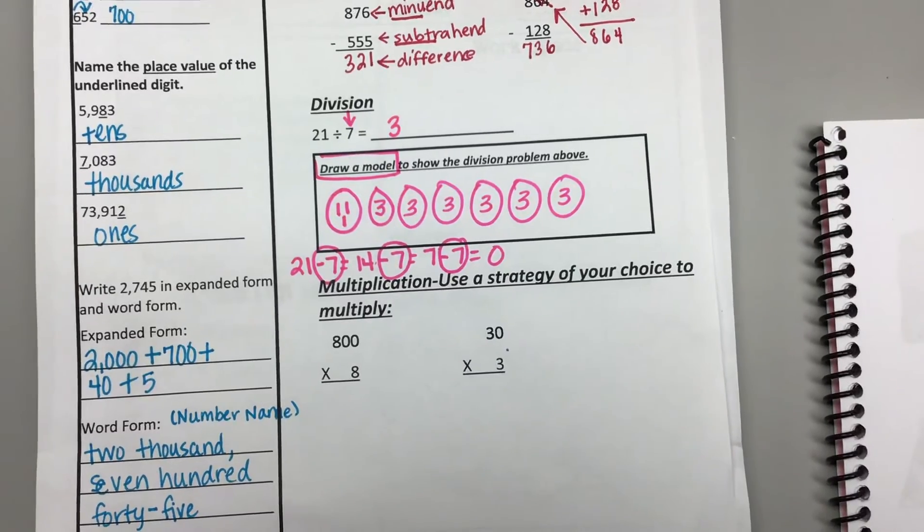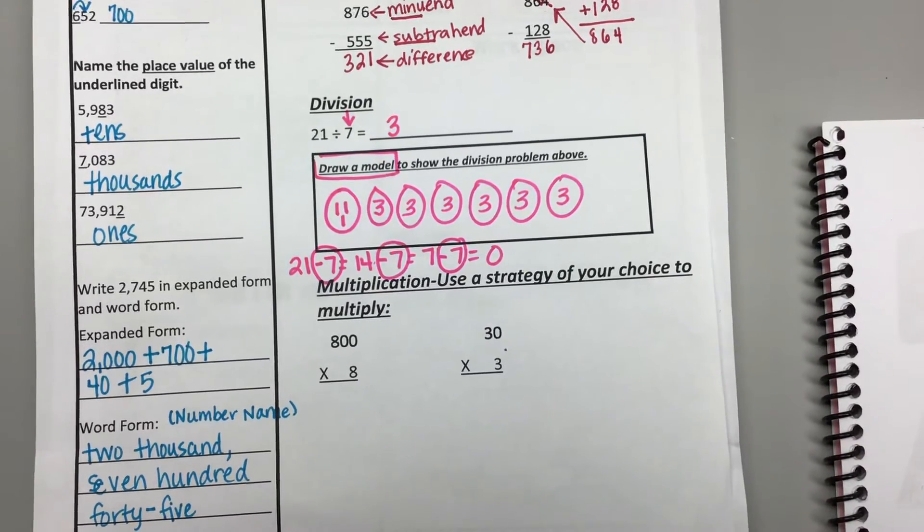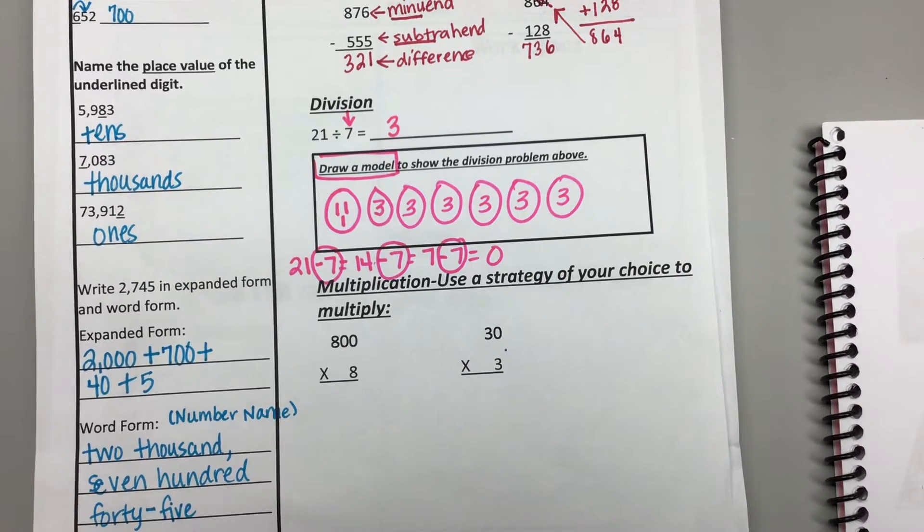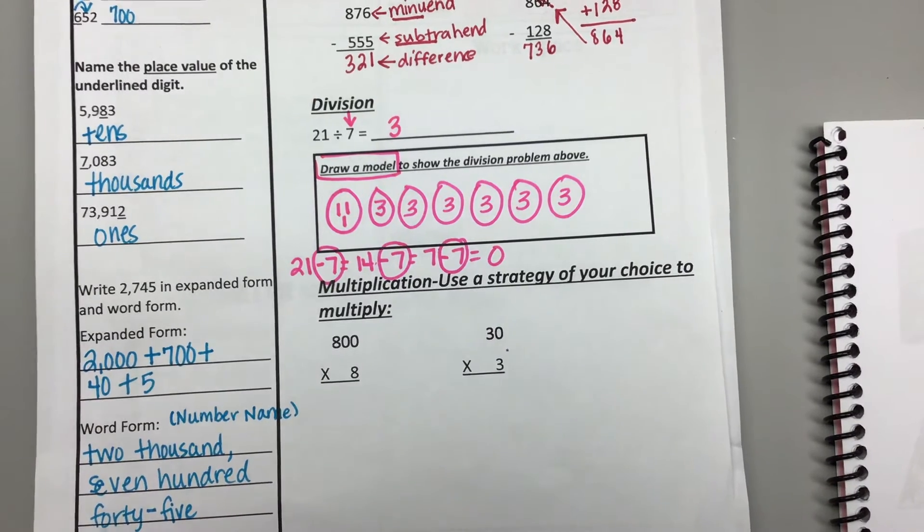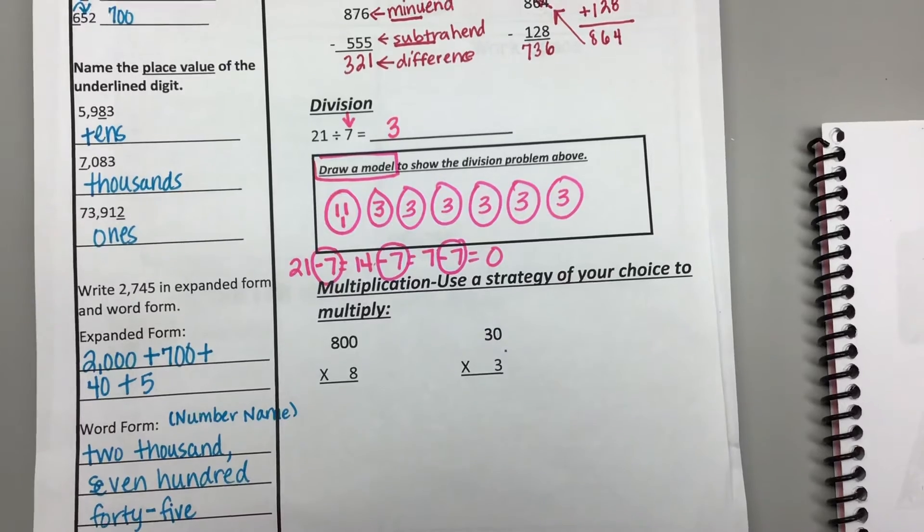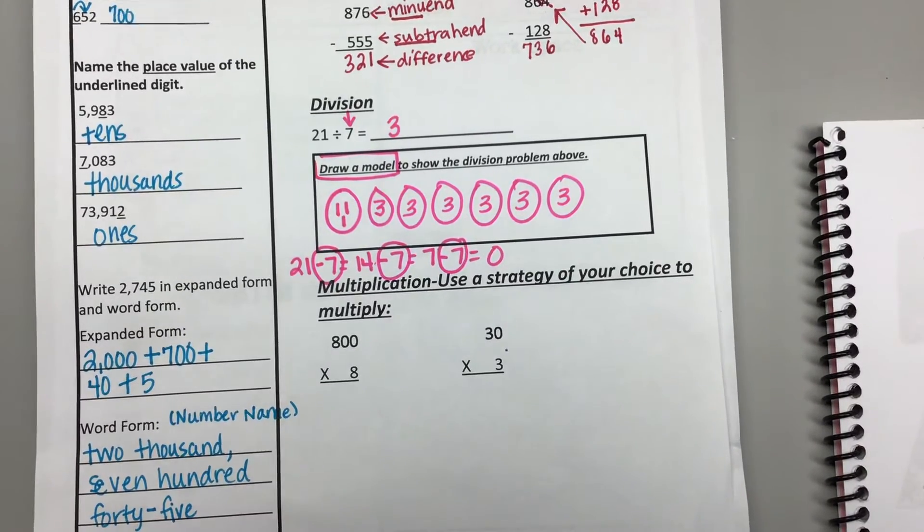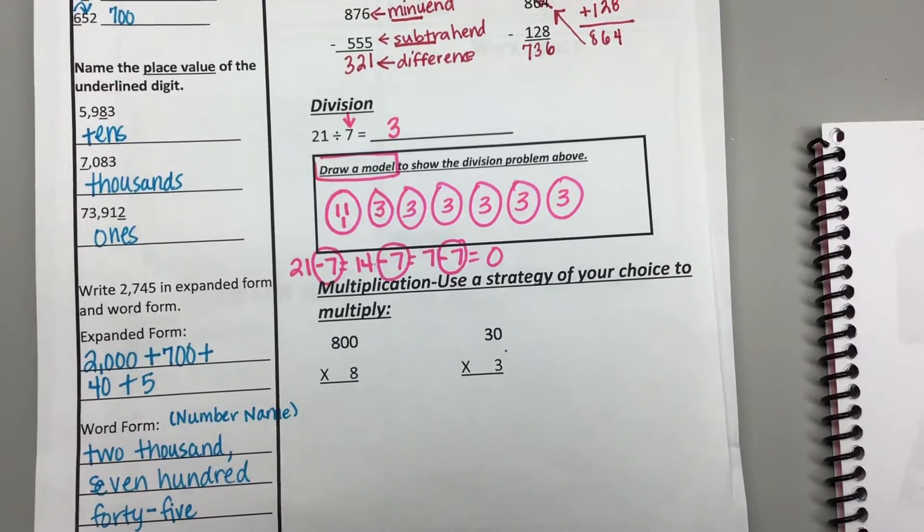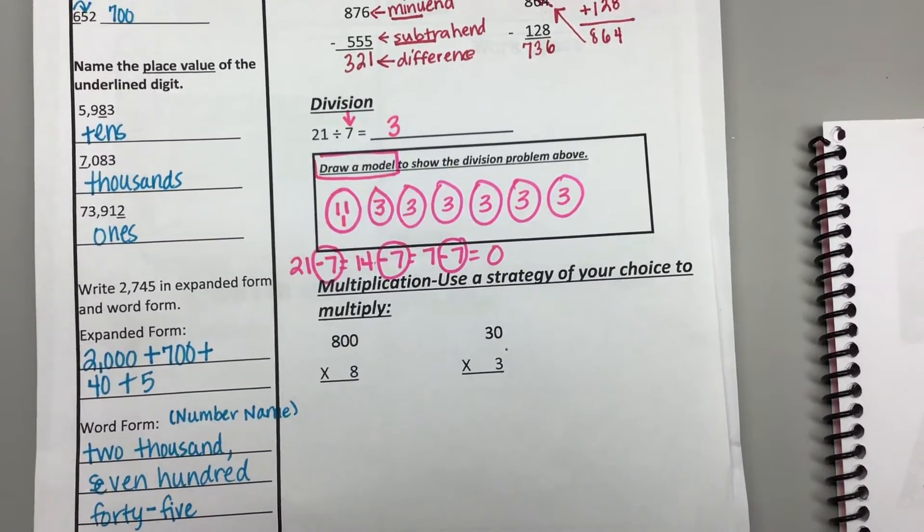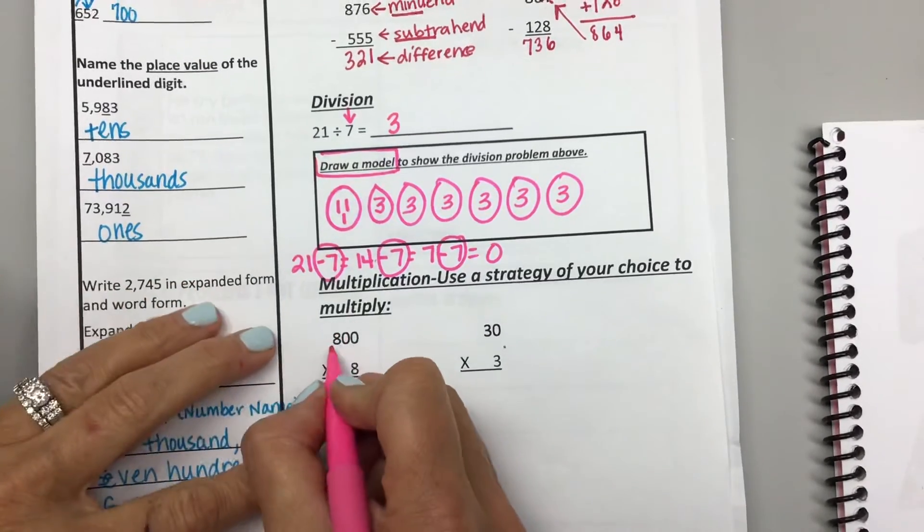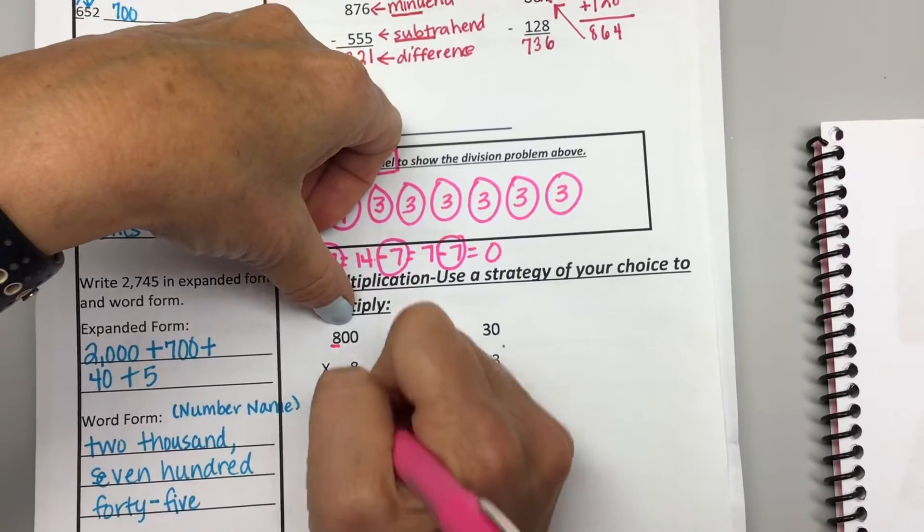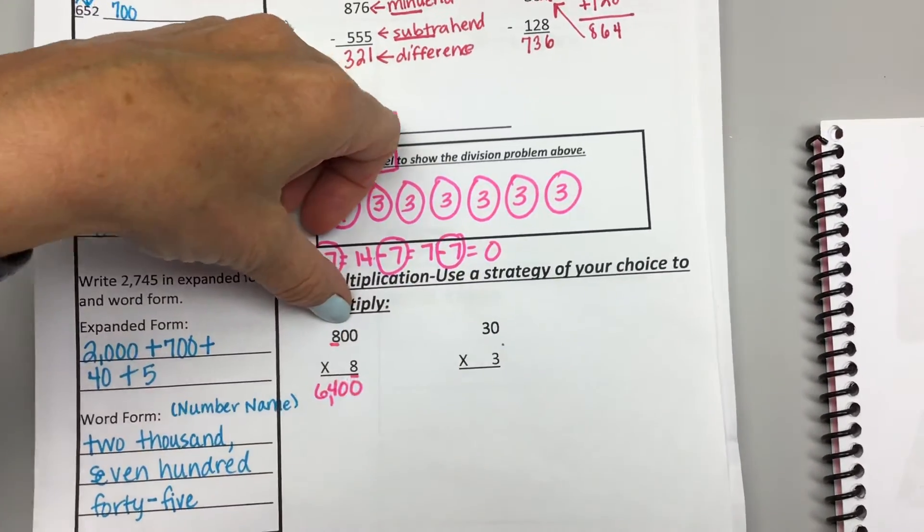Levi, what did you do? Okay, so you did repeated addition with the 8 instead of 800, then you added two 0s. Ryan? I multiplied 8 times 8, and I got 64, and then I multiplied by the 0s. Then you add your two 0s. You can take 8 times 8, which is 64, and add your two 0s for 6,400.